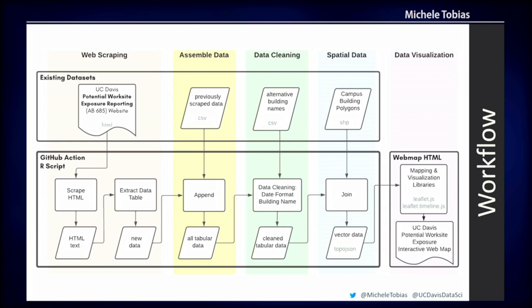Once the data is cleaned and the building name dictionary has been applied, we have to make it spatial. We join that data set to our campus building data set to make it spatial. We save it as TopoJSON because the file has gotten so big that TopoJSON is the only file type that will go on GitHub without triggering problems — I found that out a couple months ago and devised that solution.